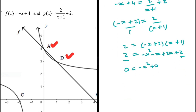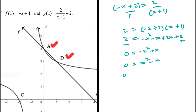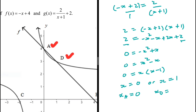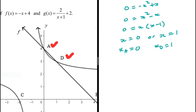Taking 2 to the right-hand side gives 0 = -x² + x + 2 - 2, which simplifies to 0 = -x² + x. Dividing both sides by -1: 0 = x² - x. Factoring out x: x(x - 1) = 0, so x = 0 or x = 1. The x-coordinate of A is 0 and the x-coordinate of D is 1.